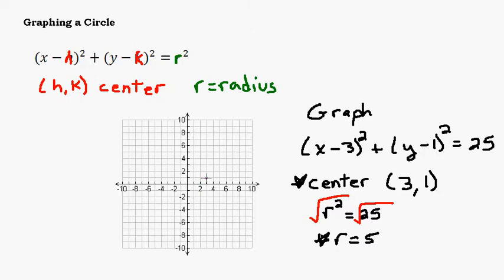So from the center we know it has a radius of 5. That means my circle is going to go up 5: 1, 2, 3, 4, 5. Down 5: 1, 2, 3, 4, 5. Right 5.